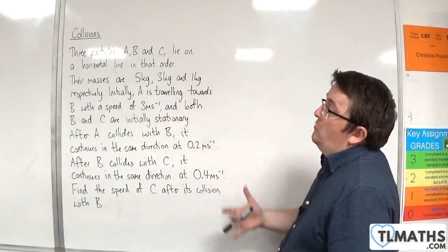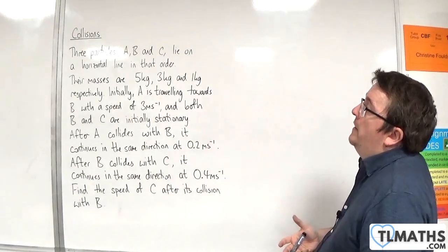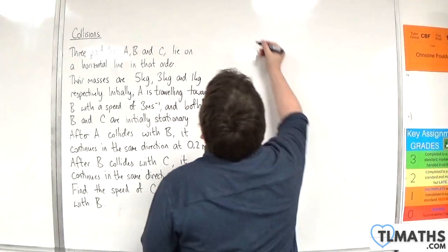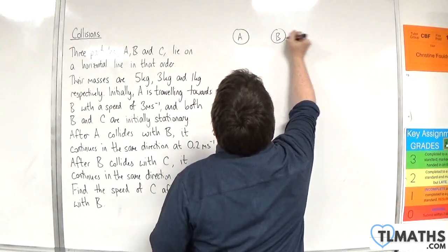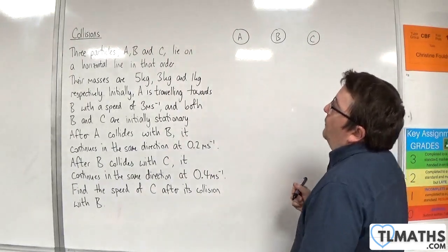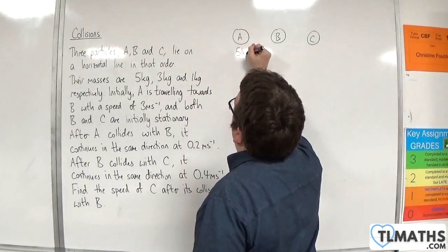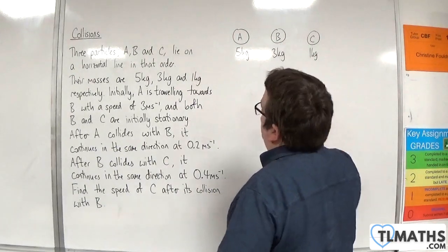In this problem, we have three particles A, B, and C lying on a horizontal line in that order. Their masses are 5 kilos, 3 kilos, and 1 kilo respectively.